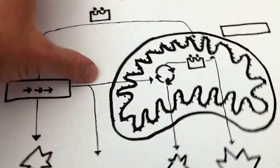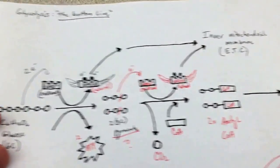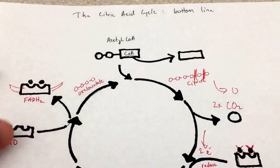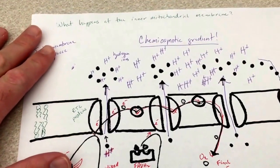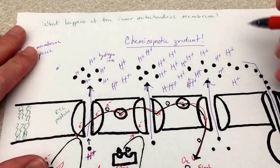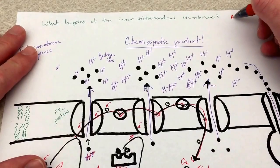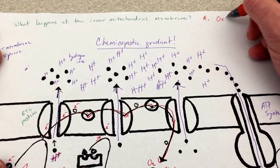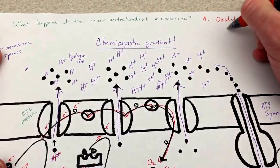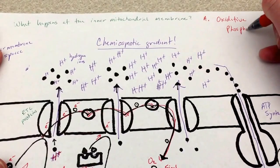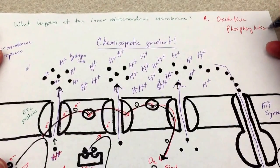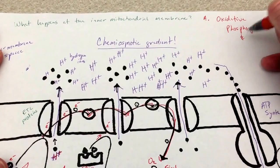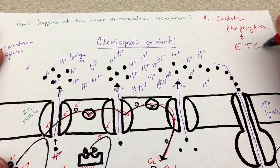By now, you should have already viewed glycolysis the bottom line, the citric acid cycle the bottom line, and what happens at the inner mitochondrial membrane — oxidative phosphorylation and the electron transport chain.